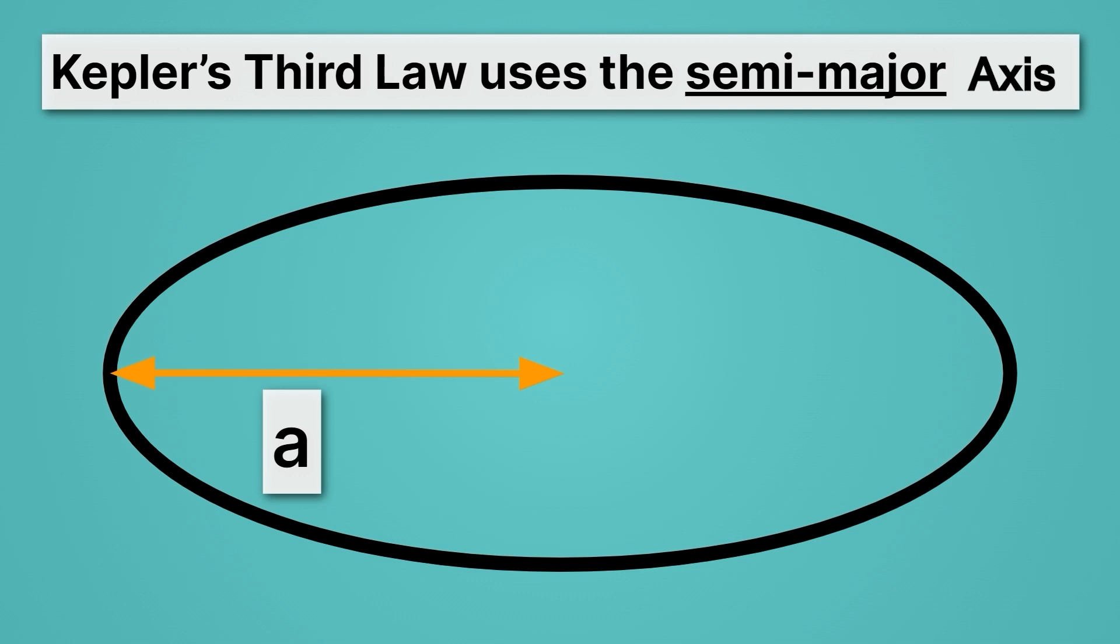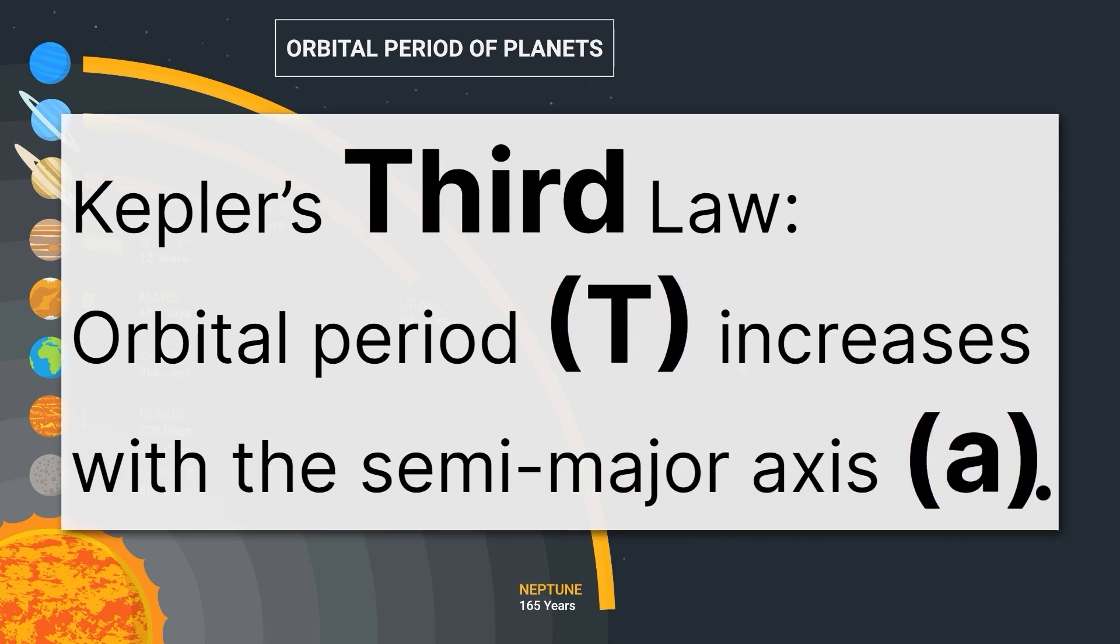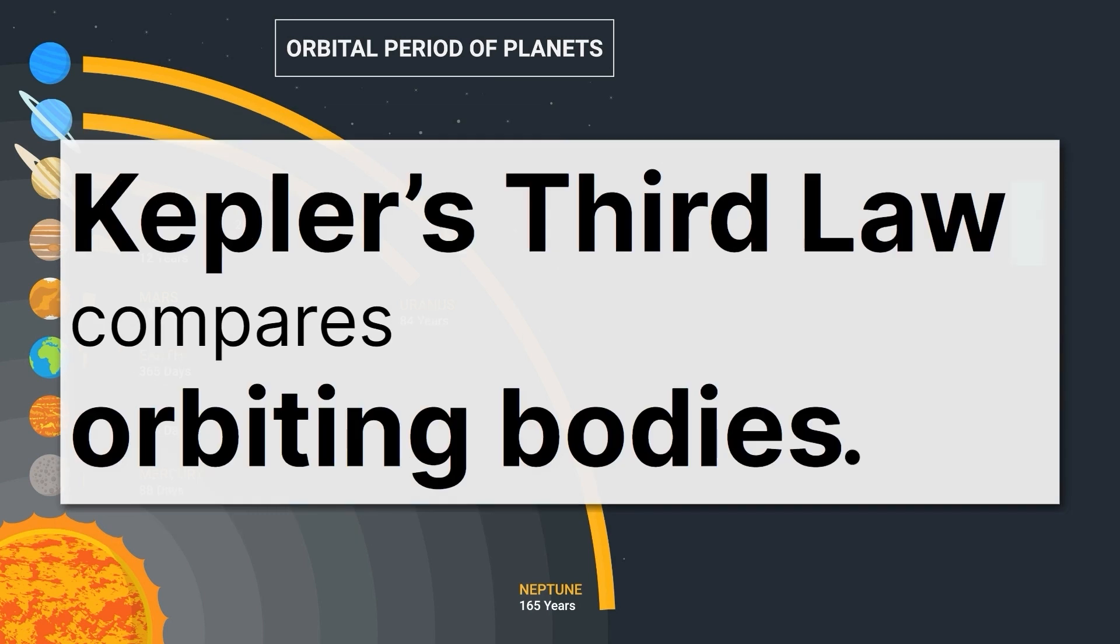Now we're able to restate Kepler's third law a little more precisely. First, we just said orbital period increases with distance. Now we're able to say what particular distance. Orbital period, which is abbreviated with a T, increases with the semi-major axis, which is abbreviated with an A. Very importantly, Kepler's third law is comparing orbiting bodies. So Kepler's third law compares orbiting bodies. It doesn't make sense to talk about Kepler's third law unless we're talking about at least two orbiting objects.